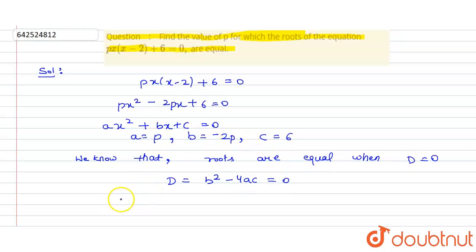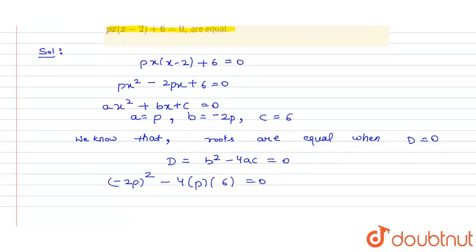So, putting the values, we will get (minus 2P) squared minus 4 times P times 6, and it will be equal to 0.